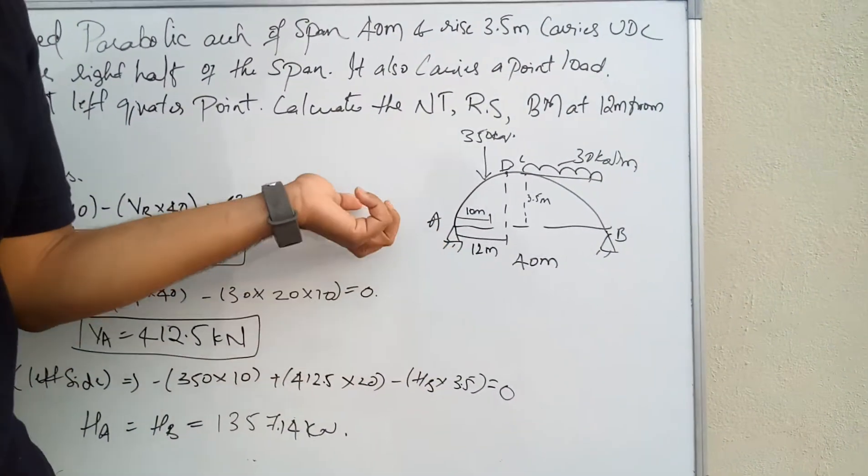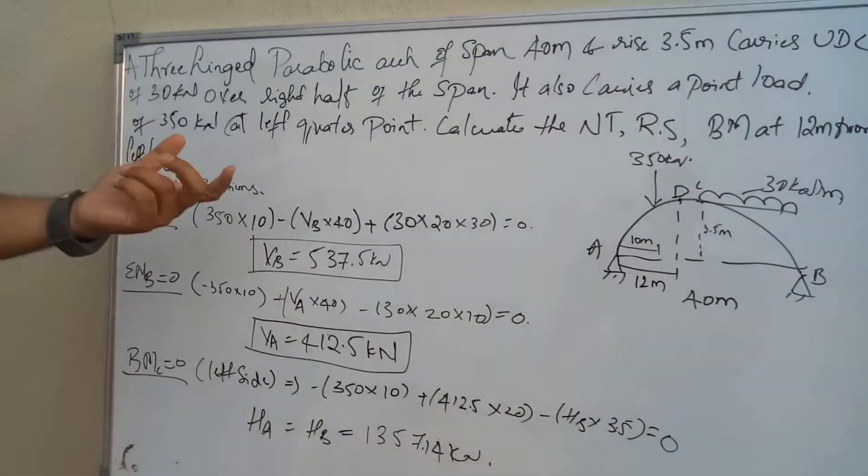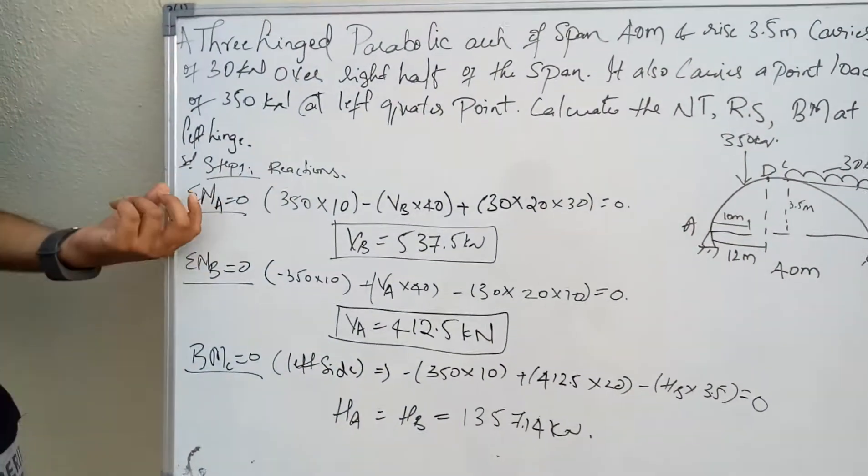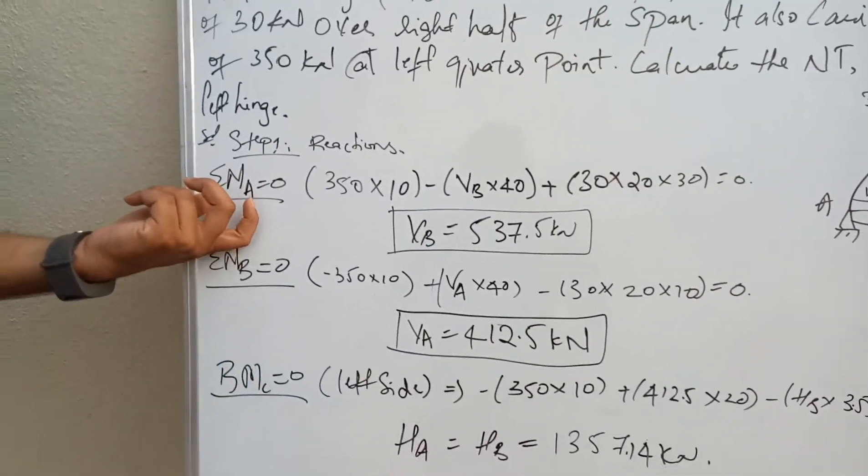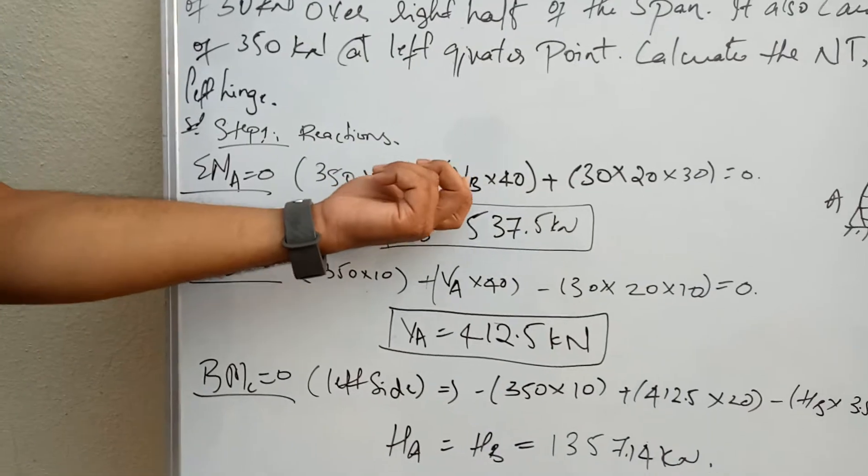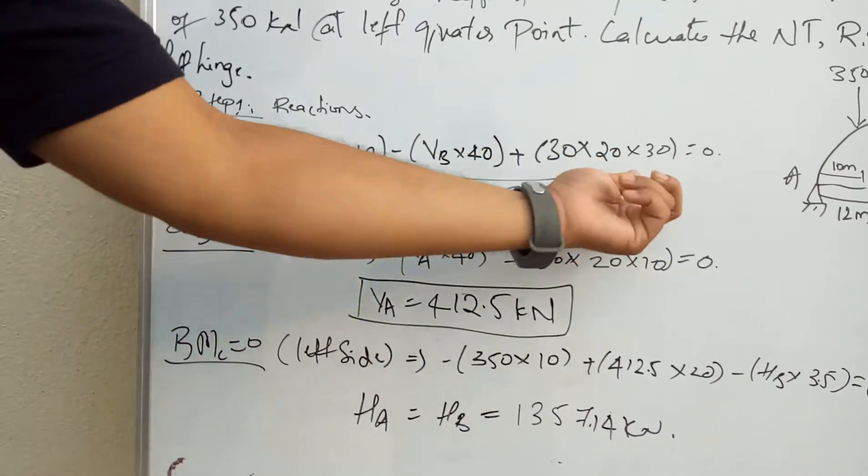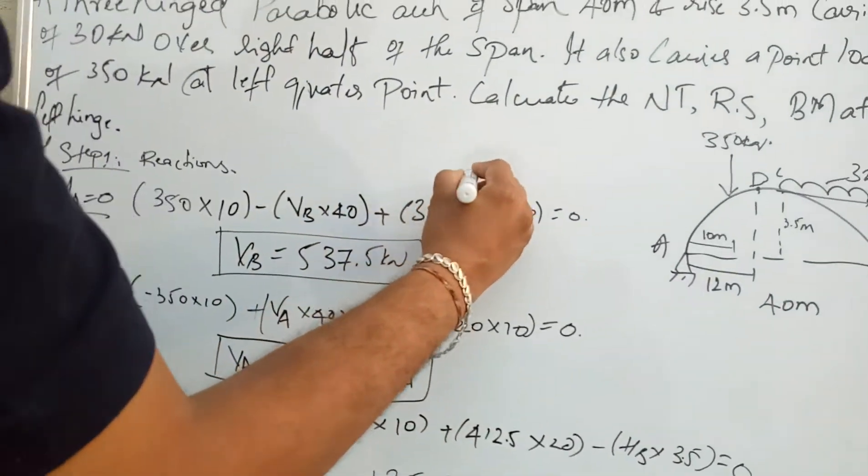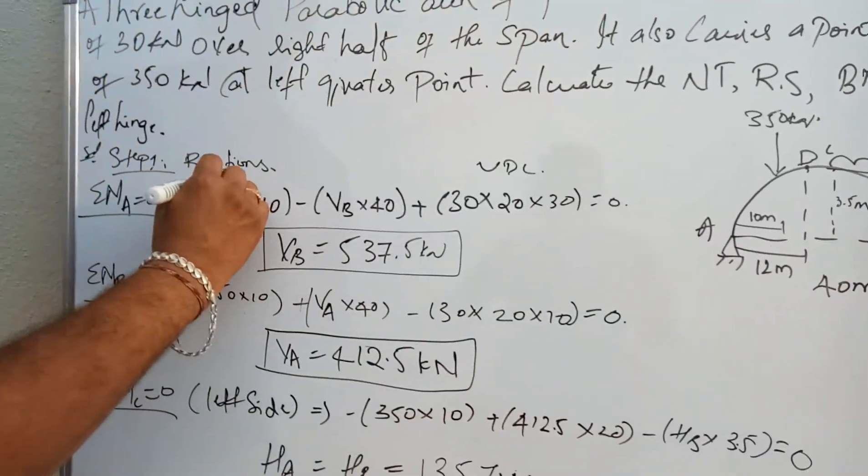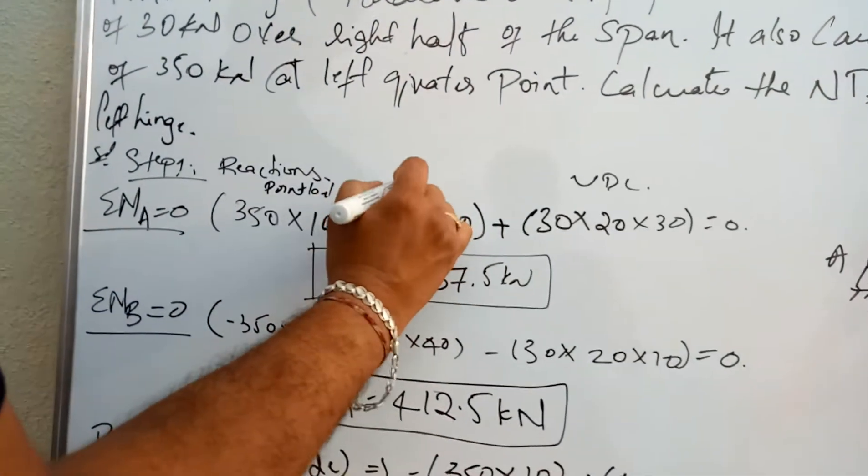Taking sigma MA equals zero: 350 into 10 minus VB into 40 plus 30 into 20 into 30. This is the complete UDL, this is the point load, and this is the reaction.